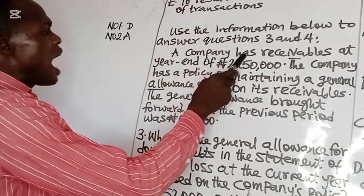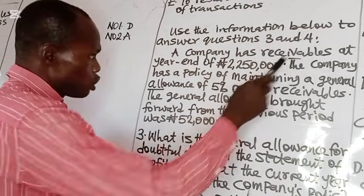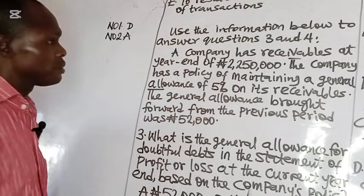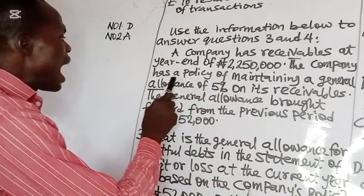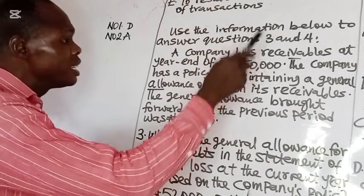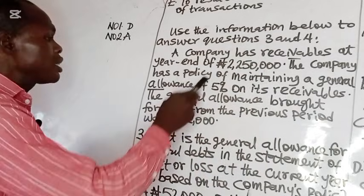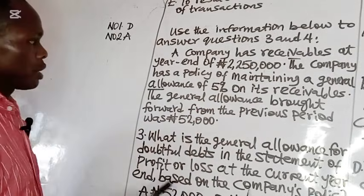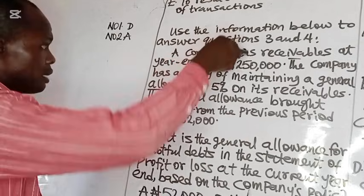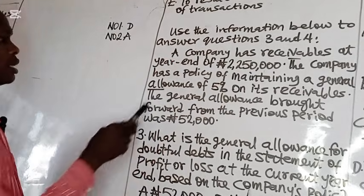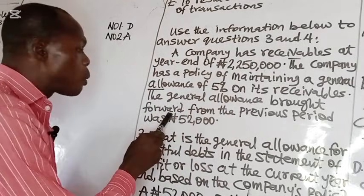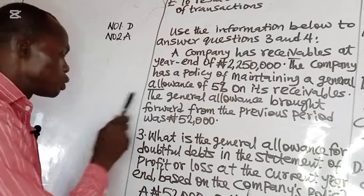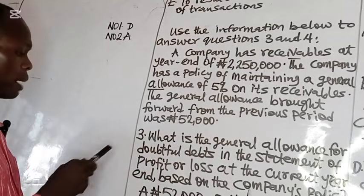Use the information below to answer questions 3 and 4. A company has receivables at year-end of $2,250,000. The company has a policy of maintaining a general allowance of 5% on its receivables. The general allowance brought forward from the previous period was $52,000.